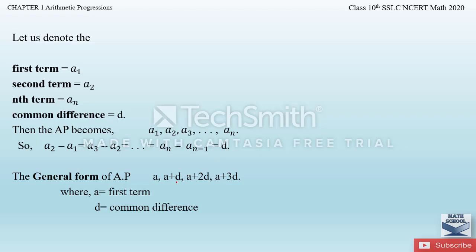The general form of an AP is: a as the first term, then a plus d as the second term, a plus 2d as the third term, a plus 3d as the fourth term, and so on — where a is the first term and d is the common difference. By just knowing a and d, we can calculate any term in the AP.